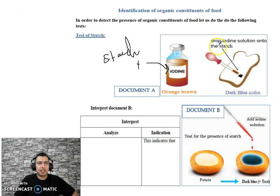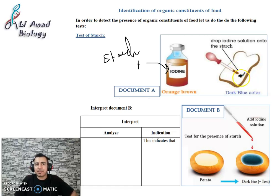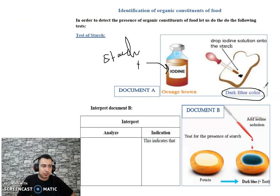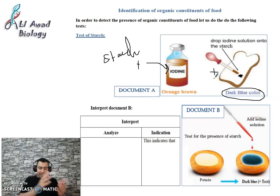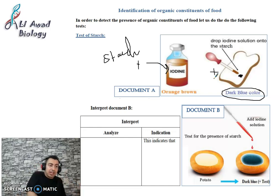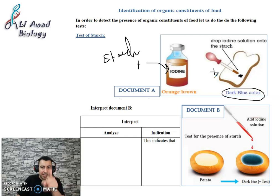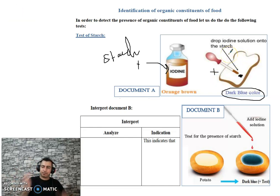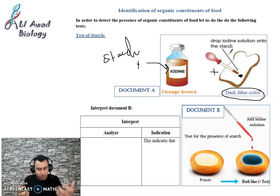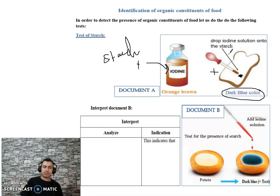I took a piece of bread and added iodine solution to it — suddenly the color becomes dark blue. This is a positive test, which means the food contains starch. If iodine changes to dark blue, it is a positive test. If iodine remains orange-brown with no change, it is a negative test, meaning no starch is present. For example, if I put iodine on sugar, the color stays orange-brown — negative test — because sugar does not contain starch. Here, iodine reacted with starch in the bread and gave dark blue, so bread contains starch — positive test.